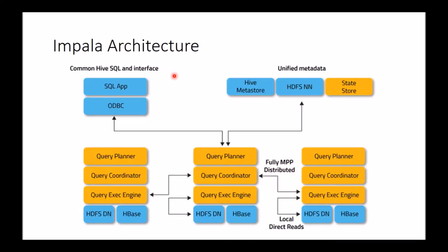Contrasting with how Impala works — this diagram is color-coded. The yellow components represent what's native to Impala, whereas the blue components represent those which are part of Hadoop or outside of Impala as a framework. Think of a query coming into Impala, perhaps through ODBC connectivity, arriving at one of the data nodes in your cluster.